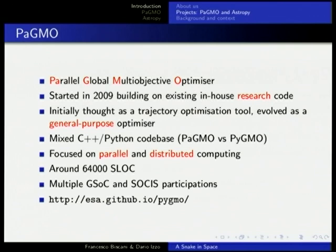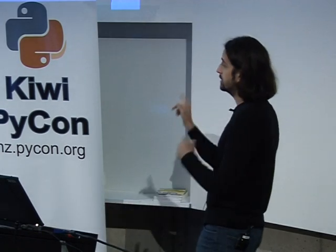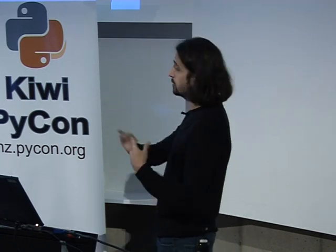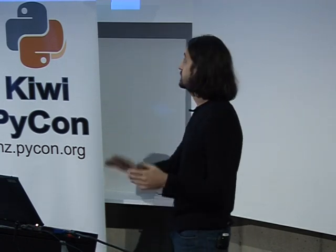It is essentially a mixed C++ and Python codebase. We use two names: the C++ core is called PAGMO, and the Python part is called PyGMO. You can decide whether to use it from C++ or from Python — you can just forget about the C++ and do Python coding if you prefer, which is what we do most of the time. It's a project very much focused on parallel and distributed computing, around 70,000 lines of code.